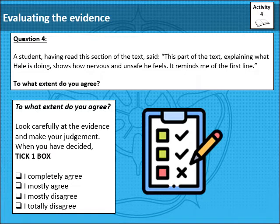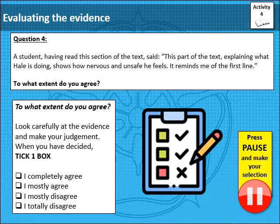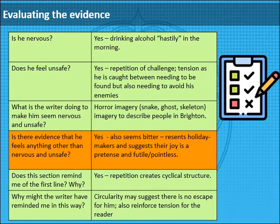Now we need to look at our evidence and see what it tells us. In what ways do we now agree or disagree with the statement? Or do we think there may be other ways to look at the text that the statement doesn't cover? Press pause, review the statement and evidence, tick one box, and then press play to move on. So I definitely agree that he is nervous, he feels unsafe, and this part of the text reminds me of the beginning. I think there's evidence that he also feels bitter and resentful, which is not quite the same thing as the question suggests, so I'm going to select 'I mostly agree.' You may have come to different conclusions and that's fine — just make sure you've got evidence to support your views.